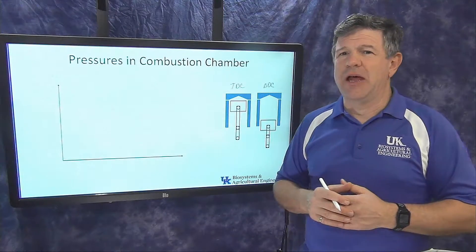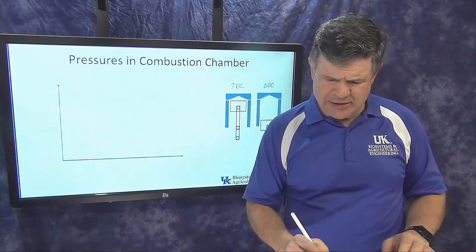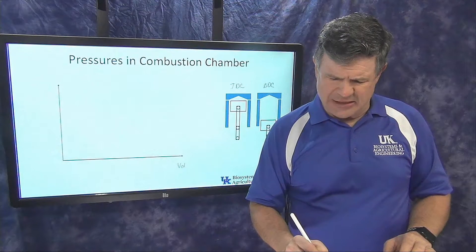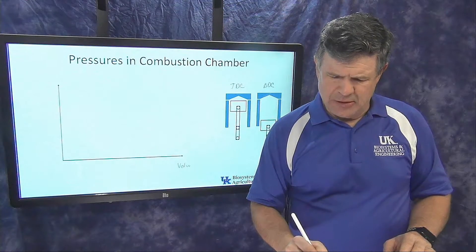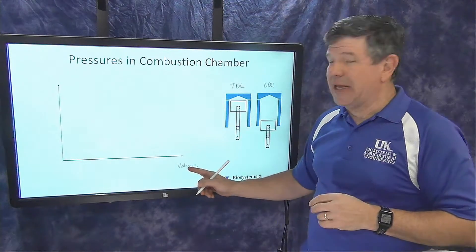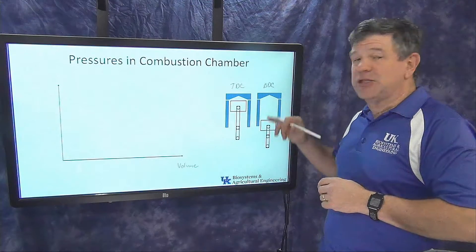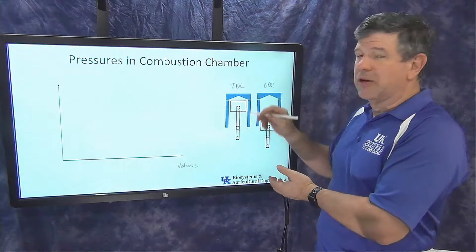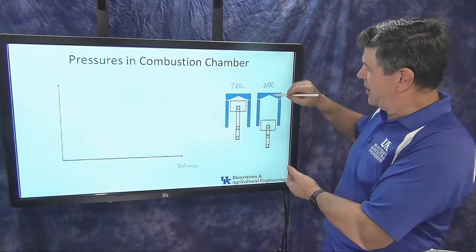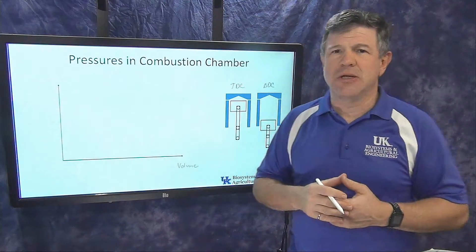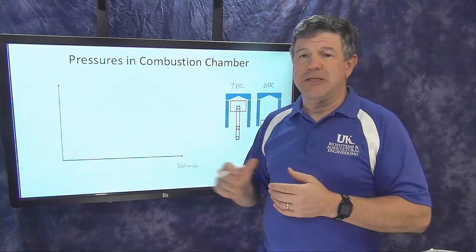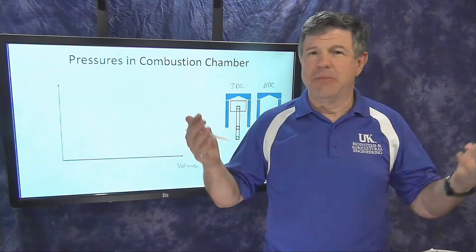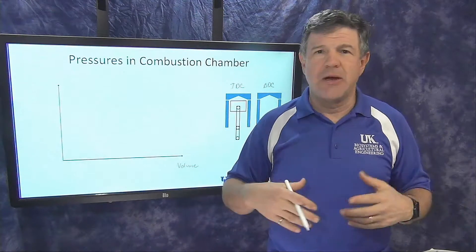I've got the makings of a graph here. We're going to plot on the x-axis the volume of gases above that piston — so this is volume, which could be in units of cubic inches or cubic centimeters. We've already talked about displacement and clearance volume; the total volume is displacement plus clearance volume. Now we're going to plot this on the graph.